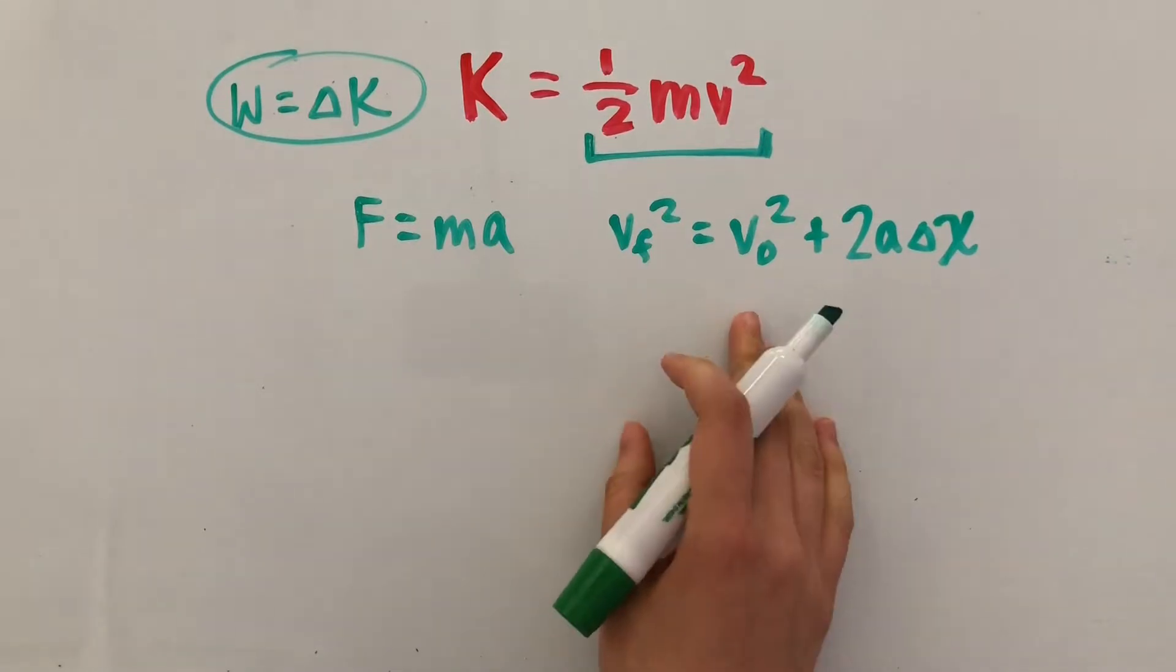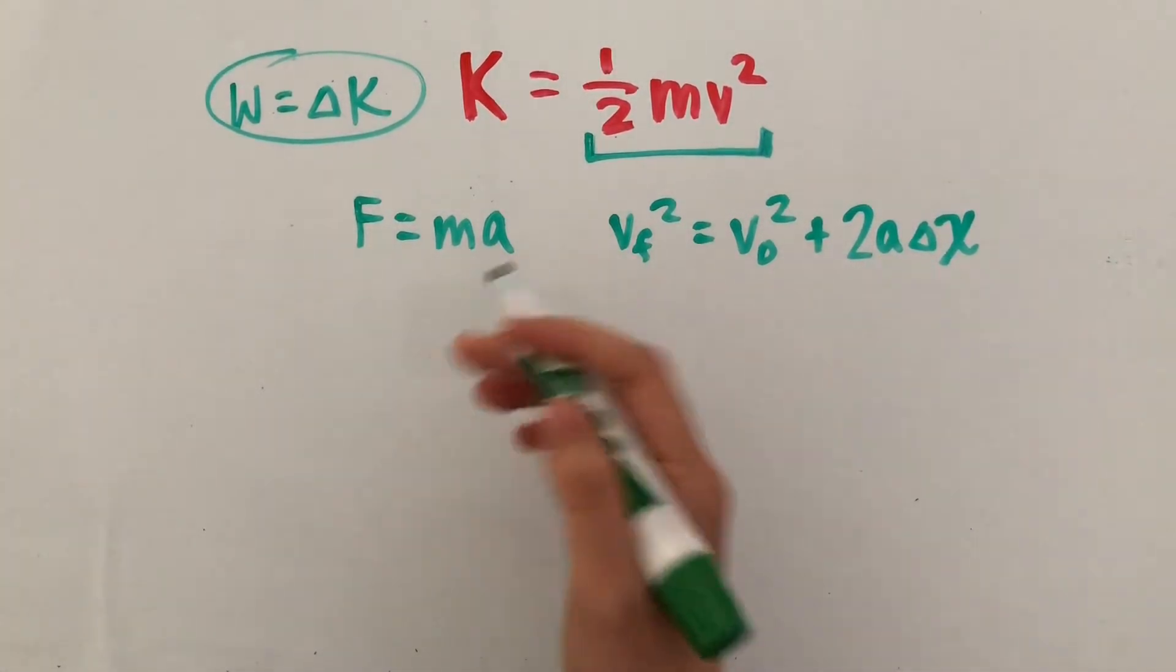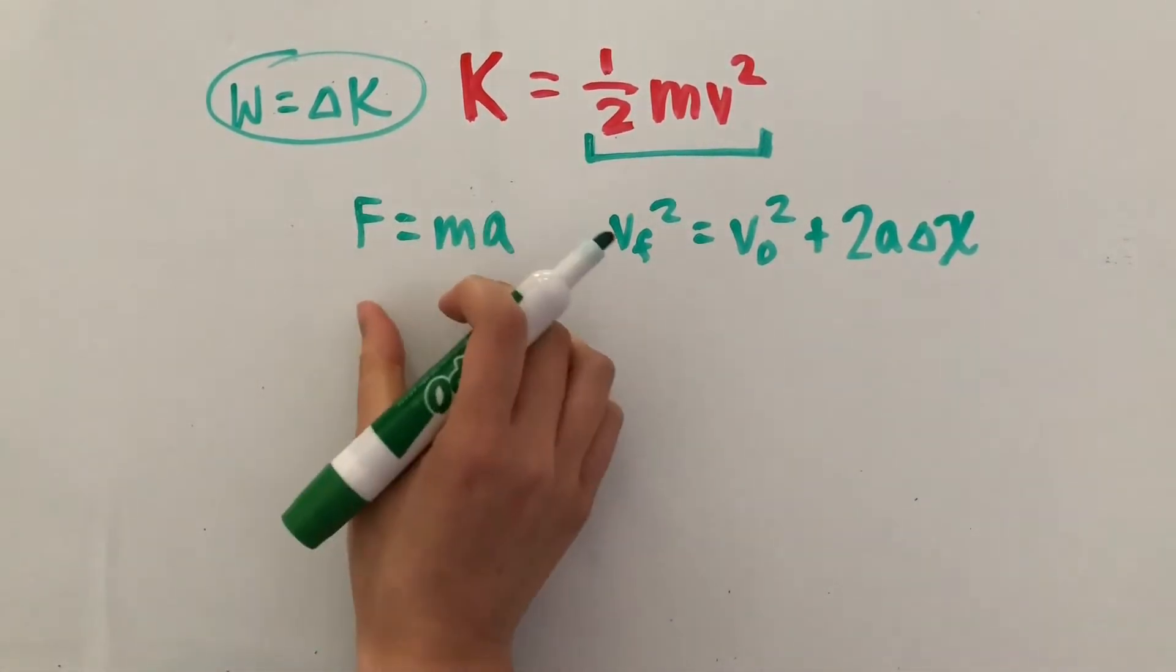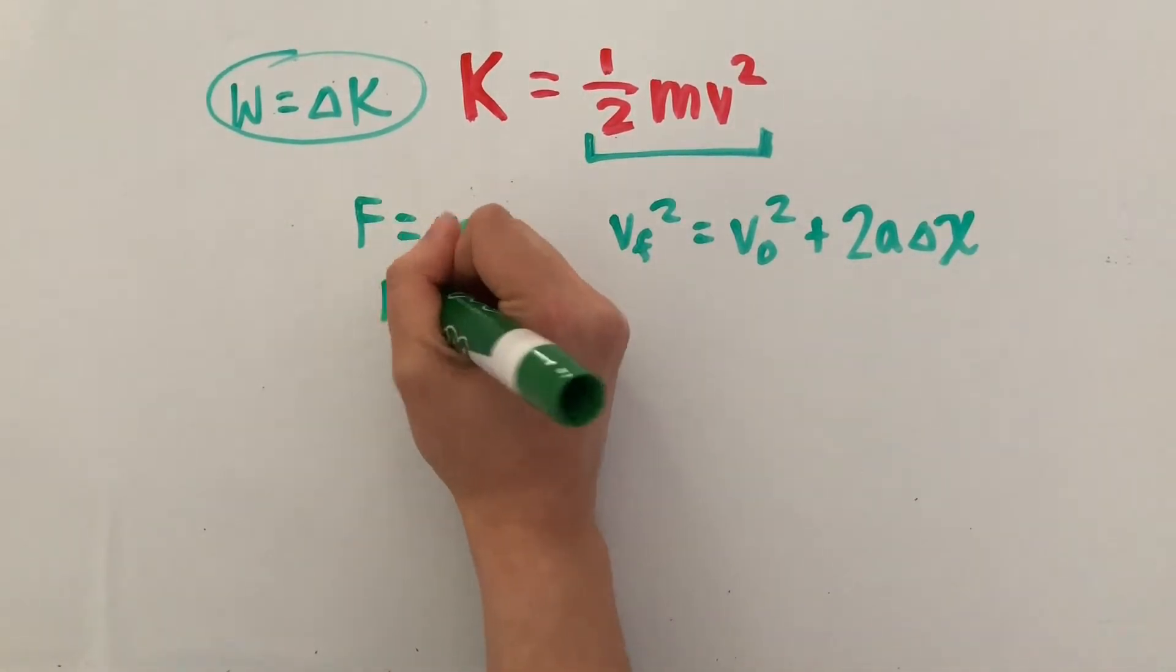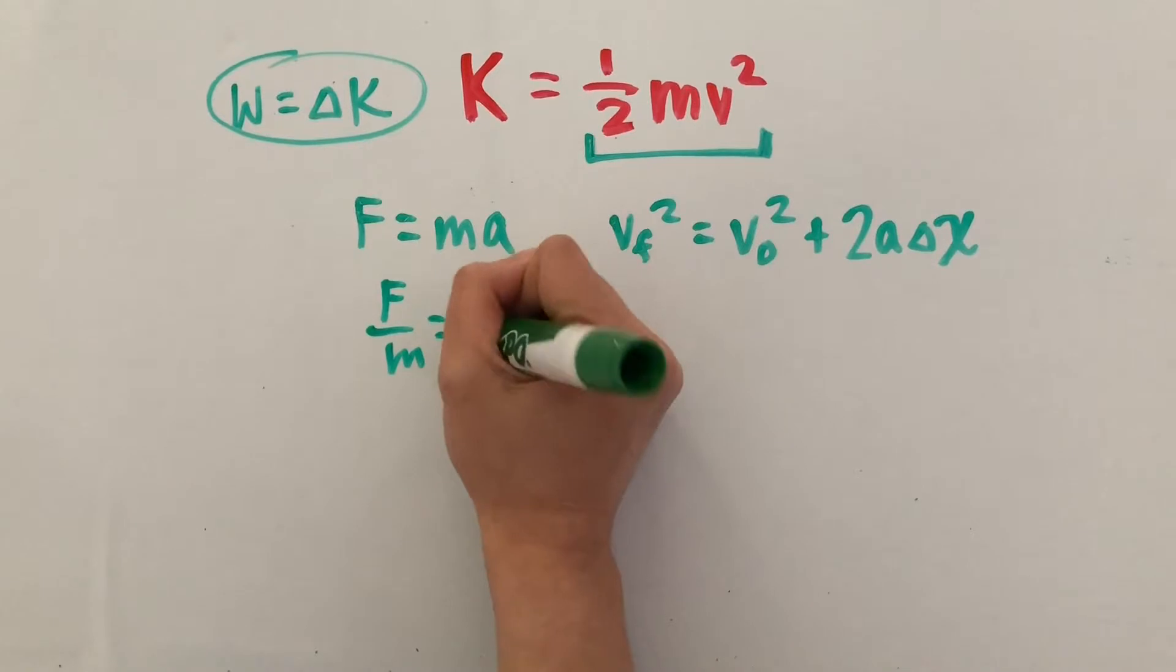So we've got our two equations down. And now let's solve for acceleration in both of them. So in this first one, it's pretty easy. All you have to do is divide both sides by mass. So you get force over mass is equal to acceleration.